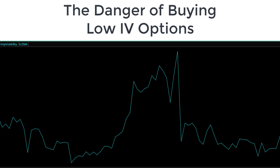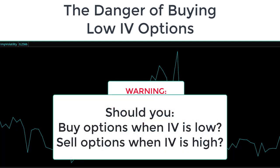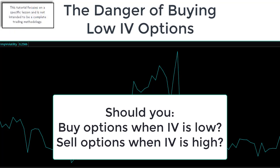Time for some myth-busting. There is a common teaching in options that you should buy options when implied volatility is low. The reasoning is that volatility is priced into the multifaceted pricing model of options, so you buy them cheap. Then when selling options, you want to sell when implied volatility is high because you're selling to get a credit and you want as much credit as possible. So is that a truth? Well, it's a half truth.